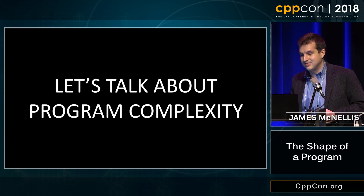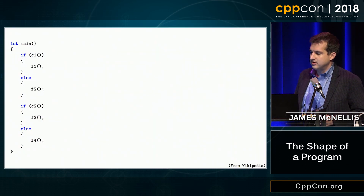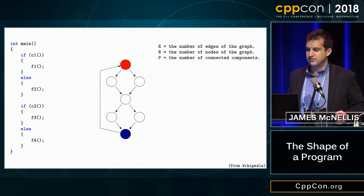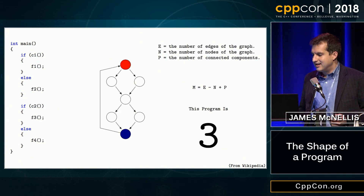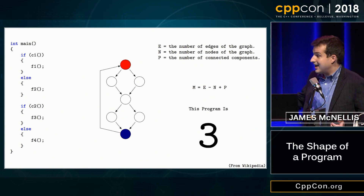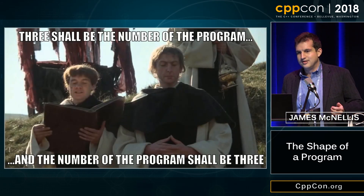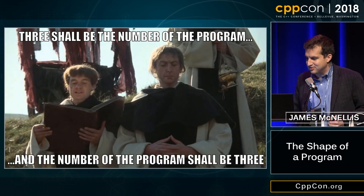Some programs are more complex than others, and there are different ways to measure that complexity. For example, you can use cyclomatic complexity. With this metric, you build a graph representing your program, then you do some graph stuff, and then there's some more of this, and then at the end you learn: 'Hey, this program is a three.' Three is the number of the program, and the number of the program shall be three.